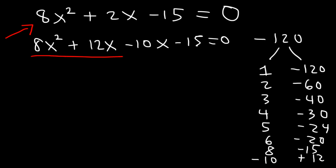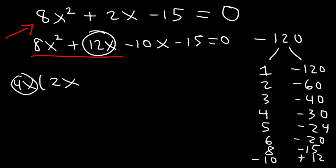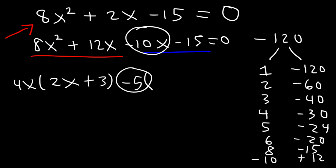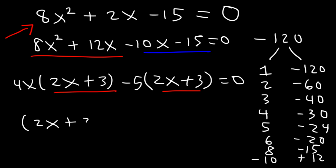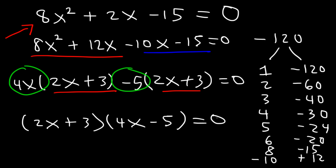In the first two terms, take out the GCF, which is 4x. 8x squared divided by 4x is 2x, and 12x divided by 4x is 3. In the last two terms, take out the greatest common factor — in this case, negative 5. Negative 10x divided by negative 5 is 2x. Negative 15 divided by negative 5 is plus 3. Now if you get two common terms, that means you're on the right track. You can write it once in a parenthesis, and the stuff on the outside — 4x and negative 5 — goes in the second parenthesis.